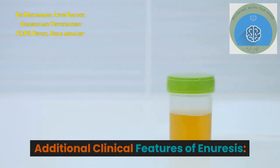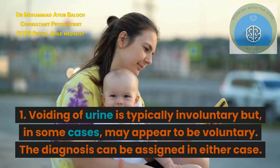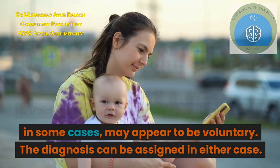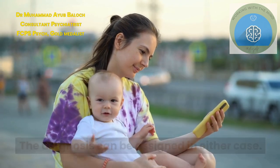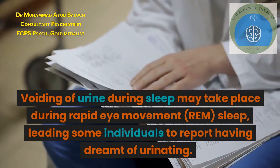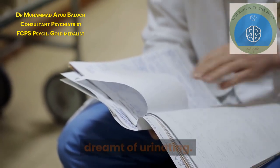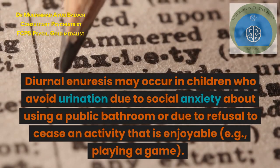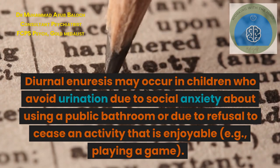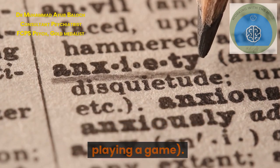Additional clinical features of enuresis: voiding of urine is typically involuntary but in some cases may appear to be voluntary; the diagnosis can be assigned in either case. Voiding during sleep may take place during REM sleep, leading some individuals to report having dreamt of urinating. Diurnal enuresis may occur in children who avoid urination due to social anxiety about using a public bathroom, or due to refusal to cease an enjoyable activity such as playing a game.